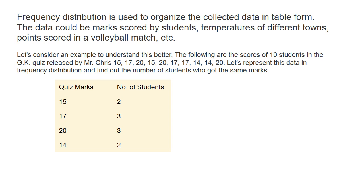The following are the scores of 10 students in a GK quiz: 15, 17, 20, 15, 20, 17, 17, 14, 14, 20. We can see that 15 appears two times. Let's represent these data in a frequency distribution table and find out the number of students who got the same marks.